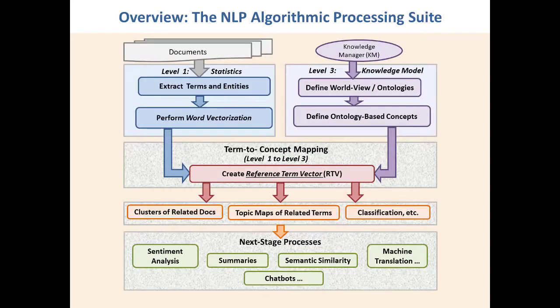Now let's take a look at a high-level block structure of the key components of NLP. On the left-hand side, we see the preprocessing — that's where you extract the terms from a document. On the far right, we're seeing high-level things involving ontologies and worldview. We're going to totally skip that for a while. Instead, let's go back to that upper left-hand block and take a look at it in more detail.